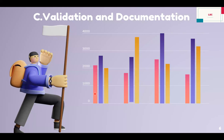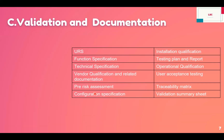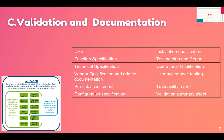C: Validation and documentation. This part should include your URS, functional specification, technical specification, vendor qualification and related documentation, pre-risk assessment, configuration specification, installation qualification, testing plan and report, operational qualification, user acceptance testing, traceability matrix, and validation summary. All required validation documents should be clearly identified, checked properly, and a list should be available at any time — including your summary sheet, validation summary sheet, and VMP. These documents should always be reviewed by SMEs and available at any time during inspection.